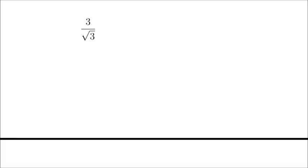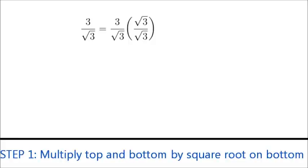In this case, the square root on the bottom of our fraction is the square root of 3. What we want to do is multiply both the top and the bottom of our fraction by the square root of 3. Notice that this is the same as multiplying by 1, so it doesn't change our fraction, it just will make it look different.